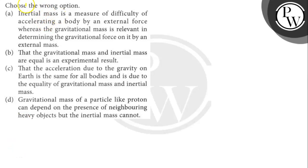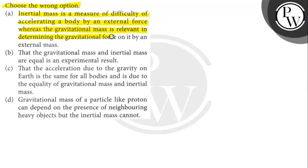Hello, let's read the question. The question says here, choose the wrong option. Option A says inertial mass is a measure of difficulty of accelerating a body by an external force, whereas the gravitational mass is relevant in determining the gravitational force on it by an external mass.